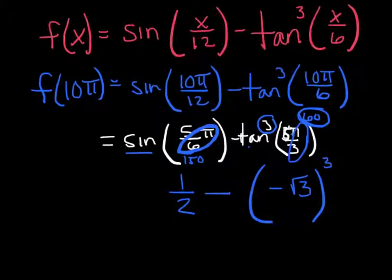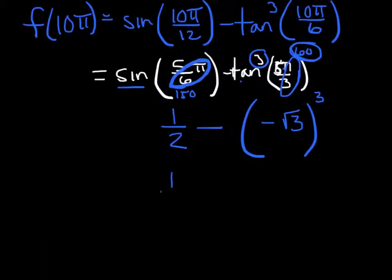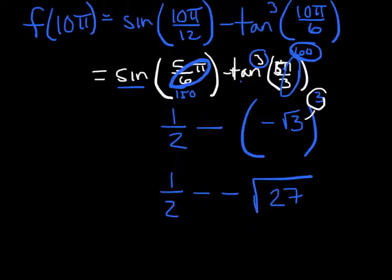So I'm going to take my time as I do this. I'm going to say this is really 1 half minus. If I cube a negative, it's going to remain negative, so that's going to stay negative. And I'm going to say that's the square root of 3 cubed, which is 27. So I just want to be clear. When you cube something, you can cube the inside first and leave it under the radical. So I'm going to get 1 half plus. This breaks down to 9 and 3, which is 3 radical 3.